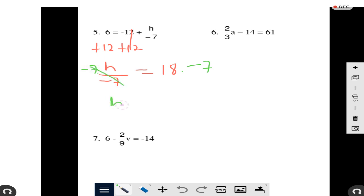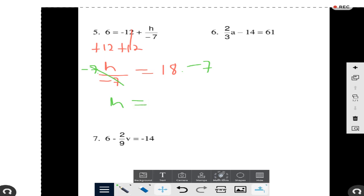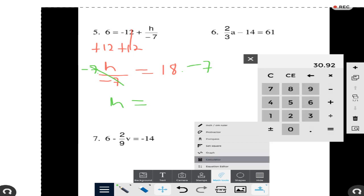And again, this is not cancellation, it's just a division. I just do this so you don't get confused. All right, we're going to go to the math tools, calculators, 18 times 7.